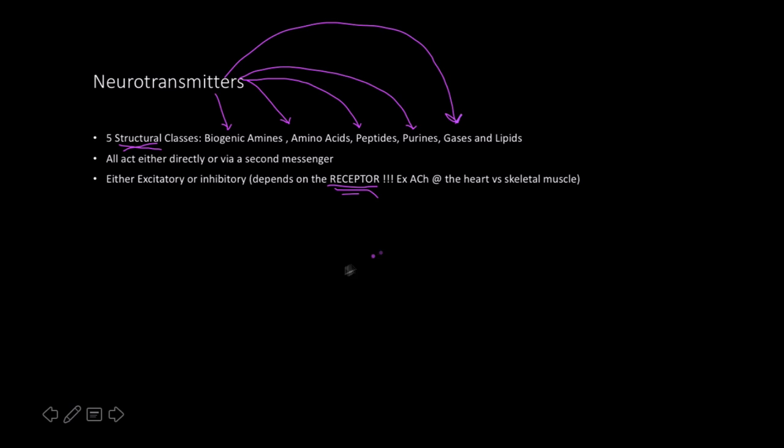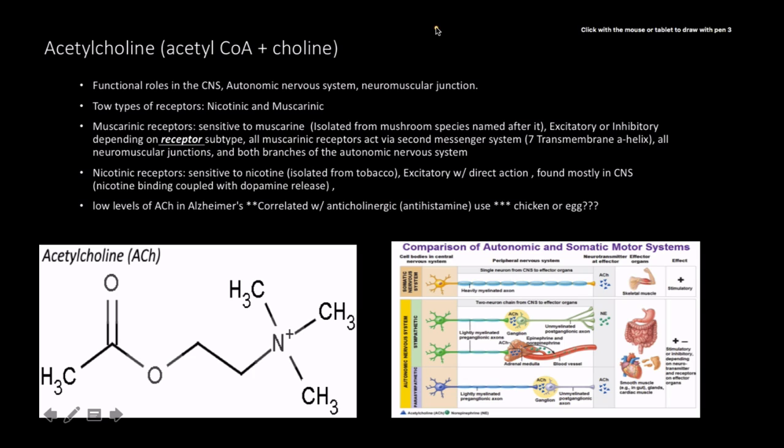One example I'll mention is acetylcholine. At the heart, acetylcholine has an inhibitory effect — it slows the heart muscle contraction rate down. At the skeletal muscle, it has an excitatory effect. So whenever I contract my skeletal muscles, that's due to acetylcholine.